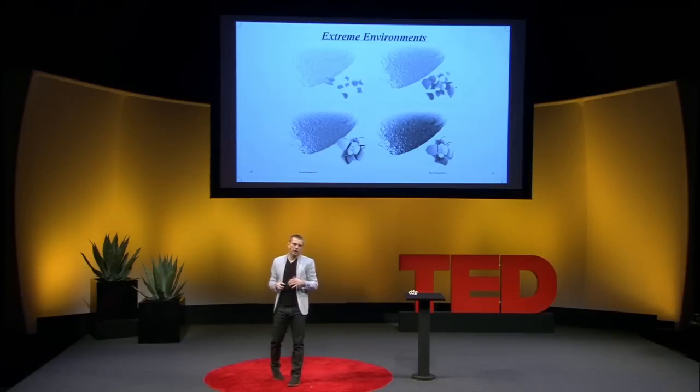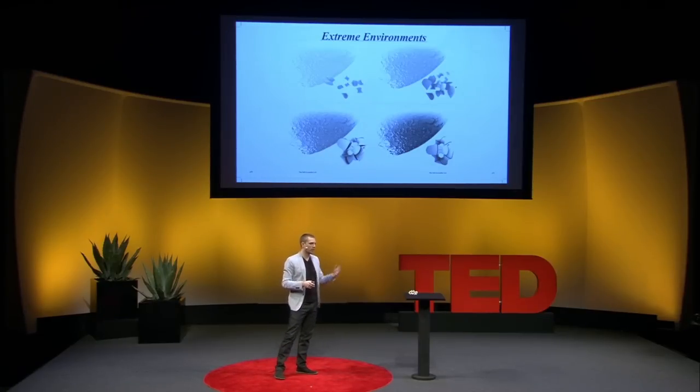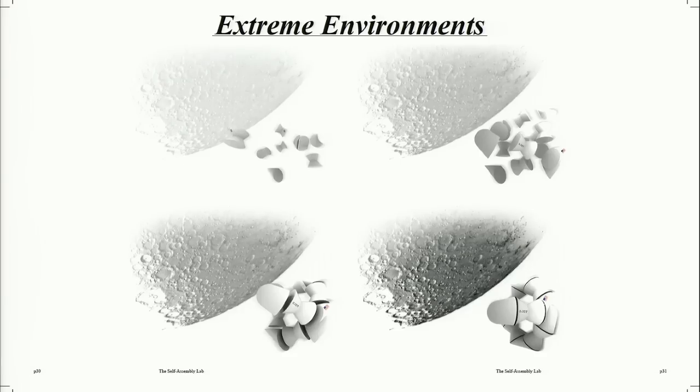I know you're probably thinking: how do we use any of this for the built environment? I've started a lab at MIT called the Self-Assembly Lab, dedicated to developing programmable materials for the built environment. We think there are a few key sectors with near-term applications. One is extreme environments — scenarios where construction is difficult because it's too large, dangerous, expensive, or has too many parts. Space is a great example. We're designing fully reconfigurable and self-assembly structures that can shift between highly functional configurations.